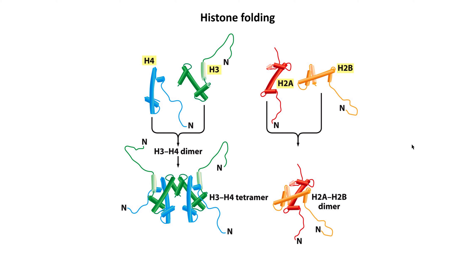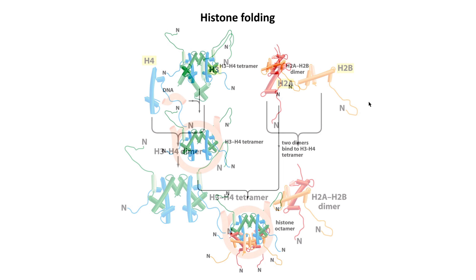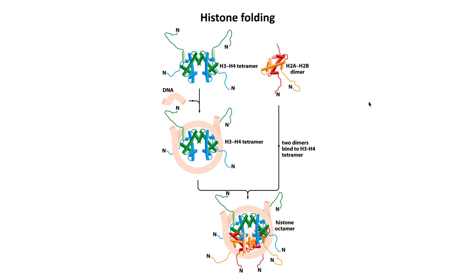Histones form octamers quite readily. Histone H3 and H4 readily dimerize with each other, and then these dimers form a tetramer. H2A and H2B pair up and form a dimer. In the presence of genomic DNA and histone chaperone proteins, these tetramers come together, get wrapped with DNA, and then the H2A and B dimers slot onto the top and bottom, creating the octamer which forms the nucleosome.